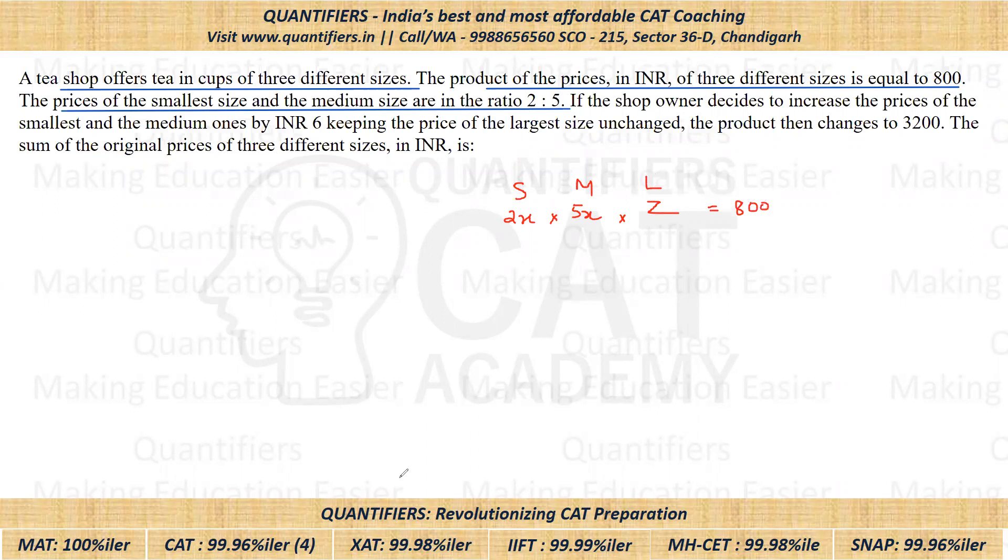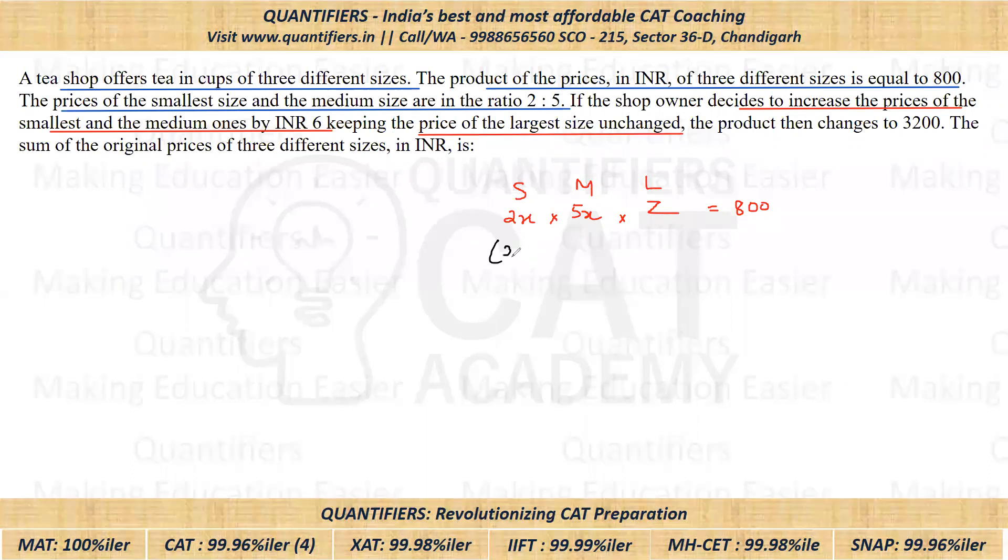Further, it is given if the shop owner decides to increase the prices of the smallest and medium by 6, keeping the price of largest size unchanged. So the smallest and medium prices increase by 6. So smallest would now cost 2x plus 6, and medium would be 5x plus 6. And largest is constant, so that would be z only. This product is given 3200.